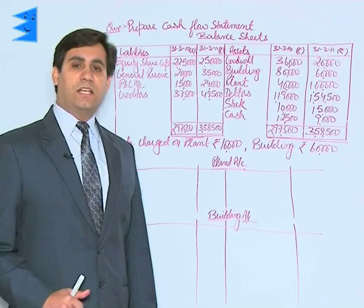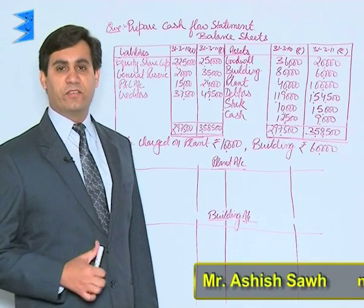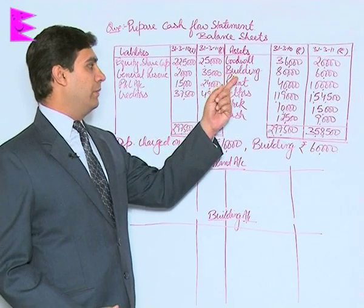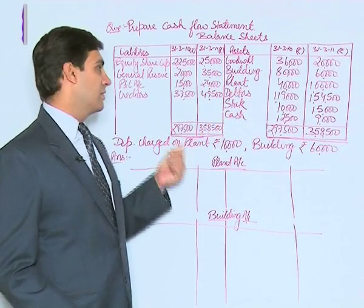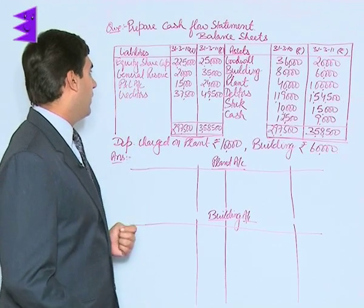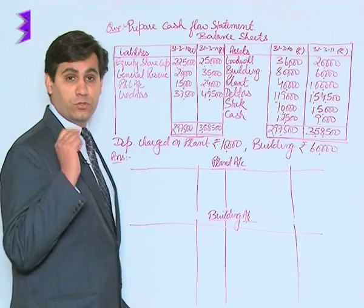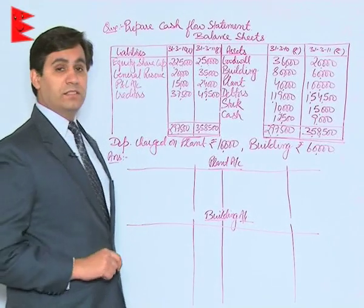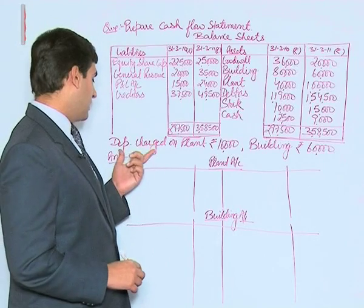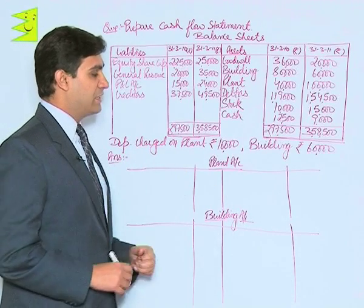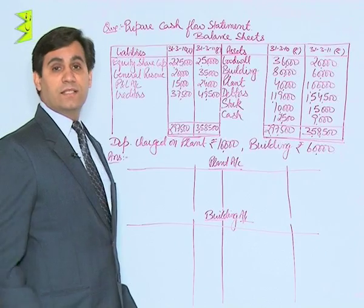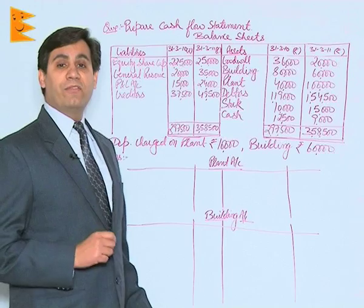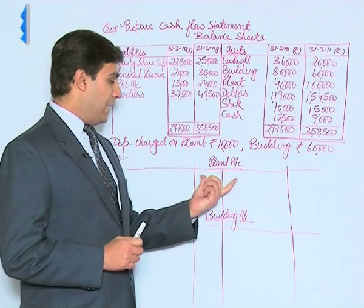Now students, how to prepare cash flow statements when certain adjustments are given. In this question, you are given balance sheets which include goodwill, building, plant, debtors, stock, and cash as assets. On the liability side we have equity share capital, general reserve — remember general reserve is an appropriation — profit and loss account, and creditors. Additional information is given: depreciation charge on plant is rupees 10,000 and on building rupees 60,000. Since additional information is given, we will prepare working notes first, so we will prepare plant account and building account.